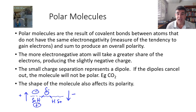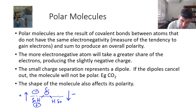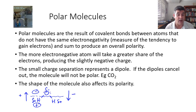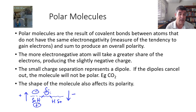More electronegative atoms will take a greater share of the electrons, and this creates the negative charge. There are also unbonded electrons on the oxygen, which magnifies the effect of this polarity and gives us a very strong negative region around the oxygen.